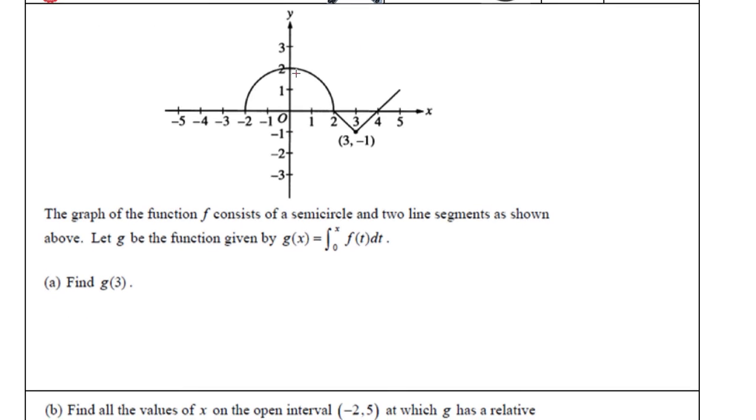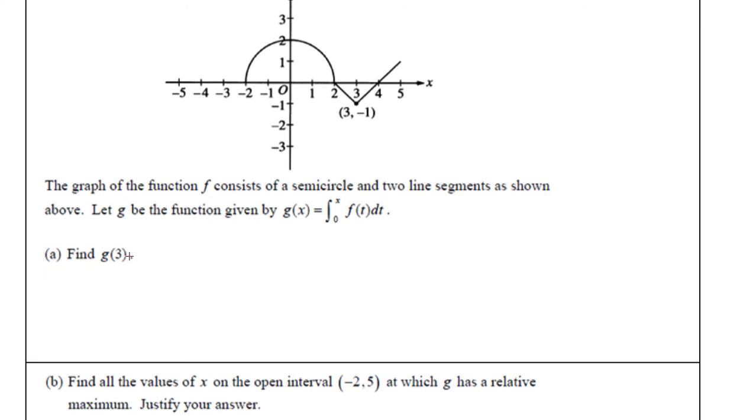Alright. So, self-check 10.2. We gave ourselves 10 minutes. Find g(3). That's gonna mean I'm plugging in 3 here. So g(3). That's equal to the integral from 0 to 3 of f(t) dt.